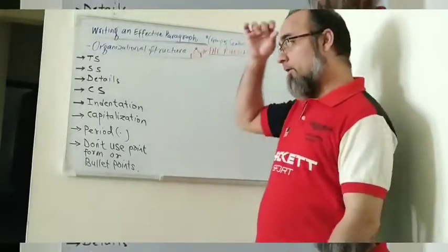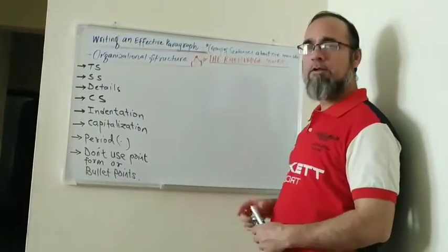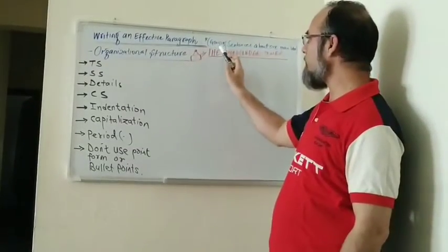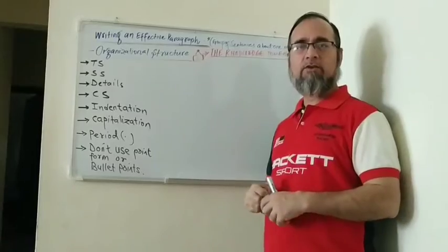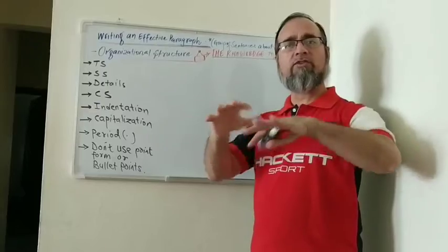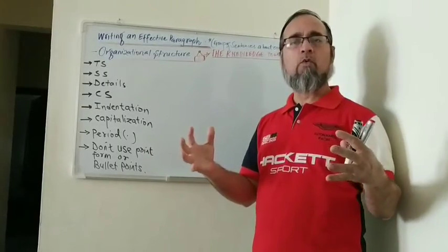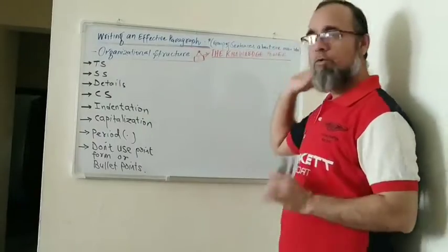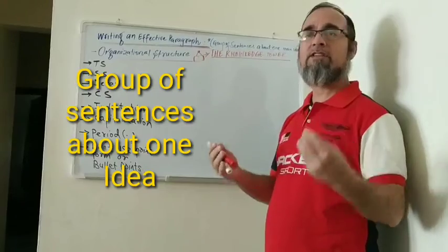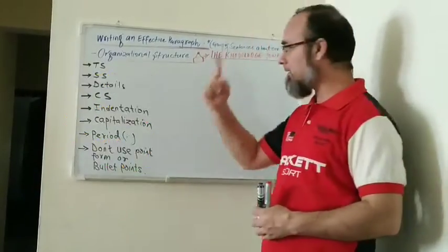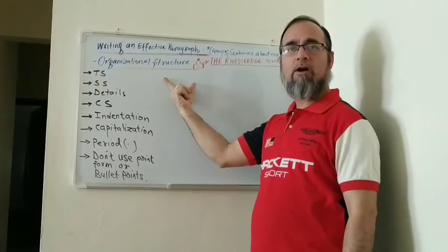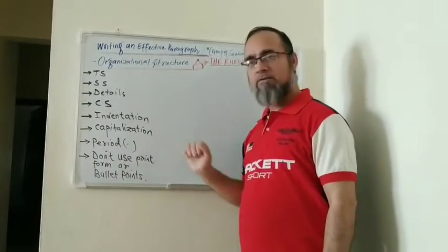First of all, you need to understand the very simple definition of what a paragraph is. A paragraph is a group of sentences about one main idea. It means there is only one main idea, around which the whole paragraph and all the supporting sentences will revolve. So one thing to keep in mind: a paragraph is a group of sentences about one idea.